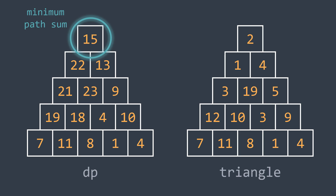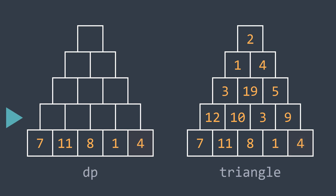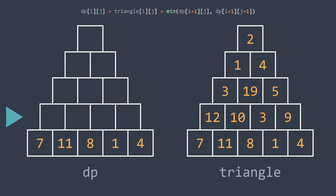Let's go through the dynamic programming process for this problem so you can understand how the 2D array dp gets filled cell by cell. We first set the base case — the last row — where dp[i][g] equals triangle[i][g]: so 7, 11, 8, 1, and 4. Moving to the row above, the relation is: dp[i][g] = triangle[i][g] + min(dp[i+1][g], dp[i+1][g+1]). So we get 12+7=19, then 10+8=18, then 3+1=4, then 9+1=10.